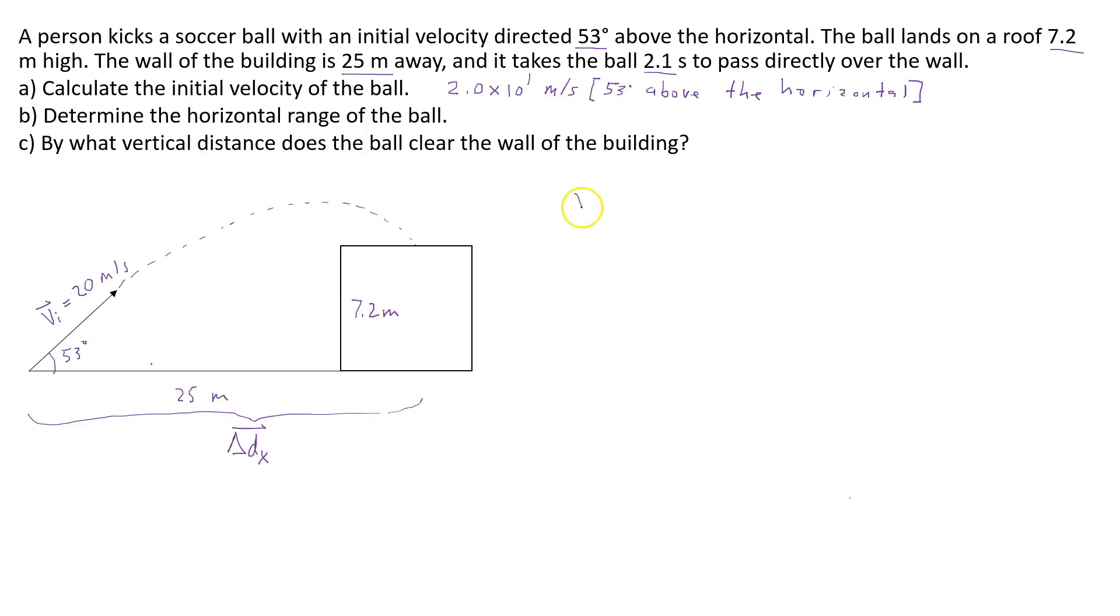So what we know is we know the initial velocity of the ball. And I'm going to use the vertical component of that velocity. So it's going to be 20 times sine 53. So that's the vertical component of the initial velocity of the ball. We also know the displacement, the vertical displacement of the ball. And that's 7.2. So the ball ends up 7.2 meters above the ground.